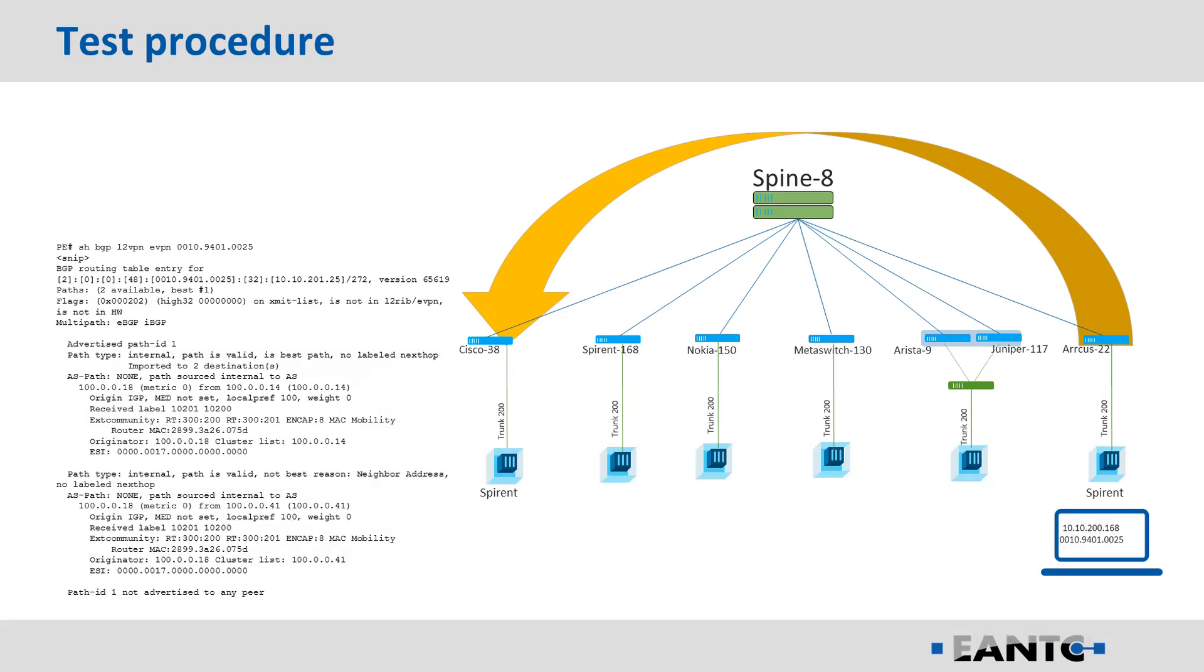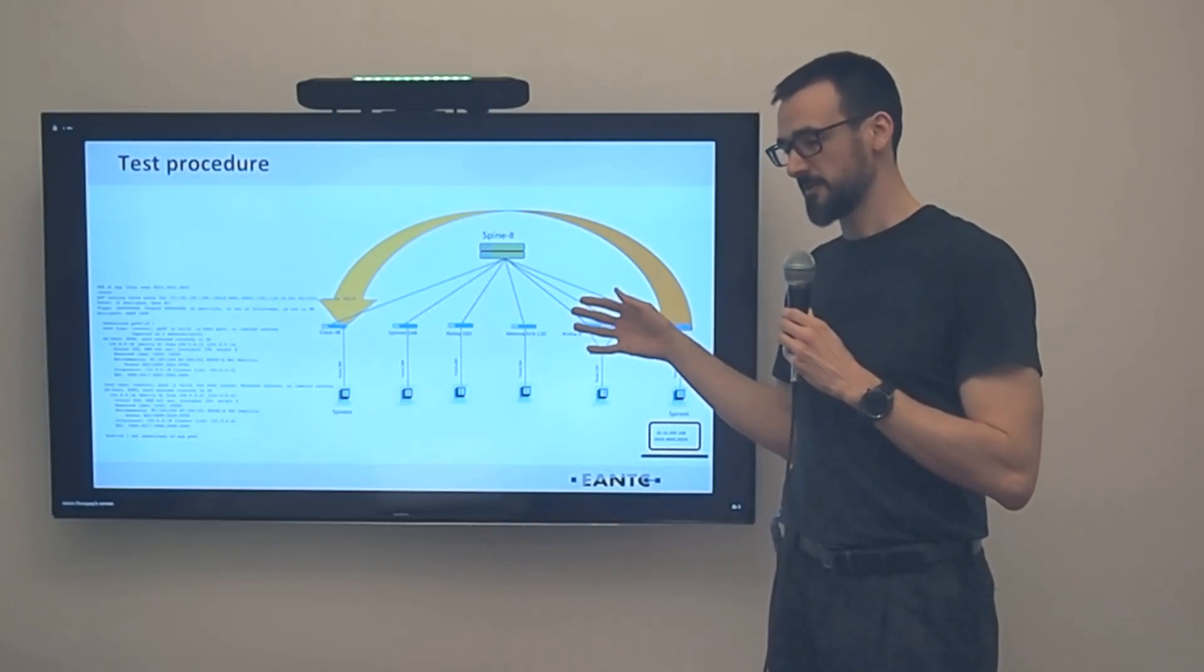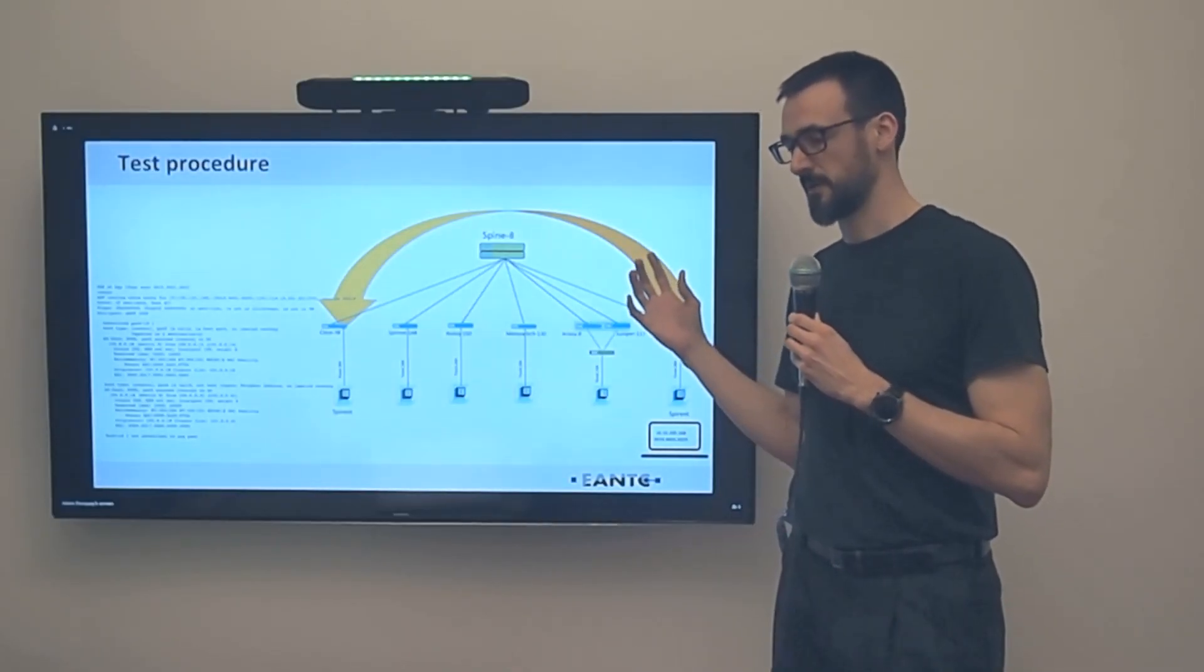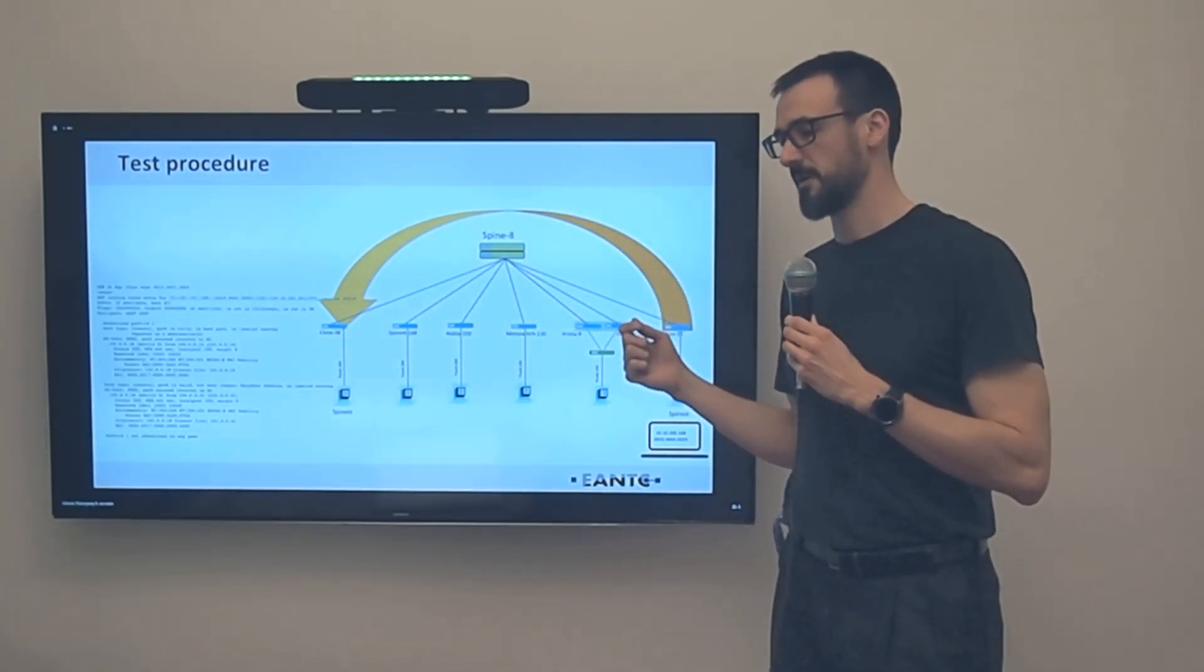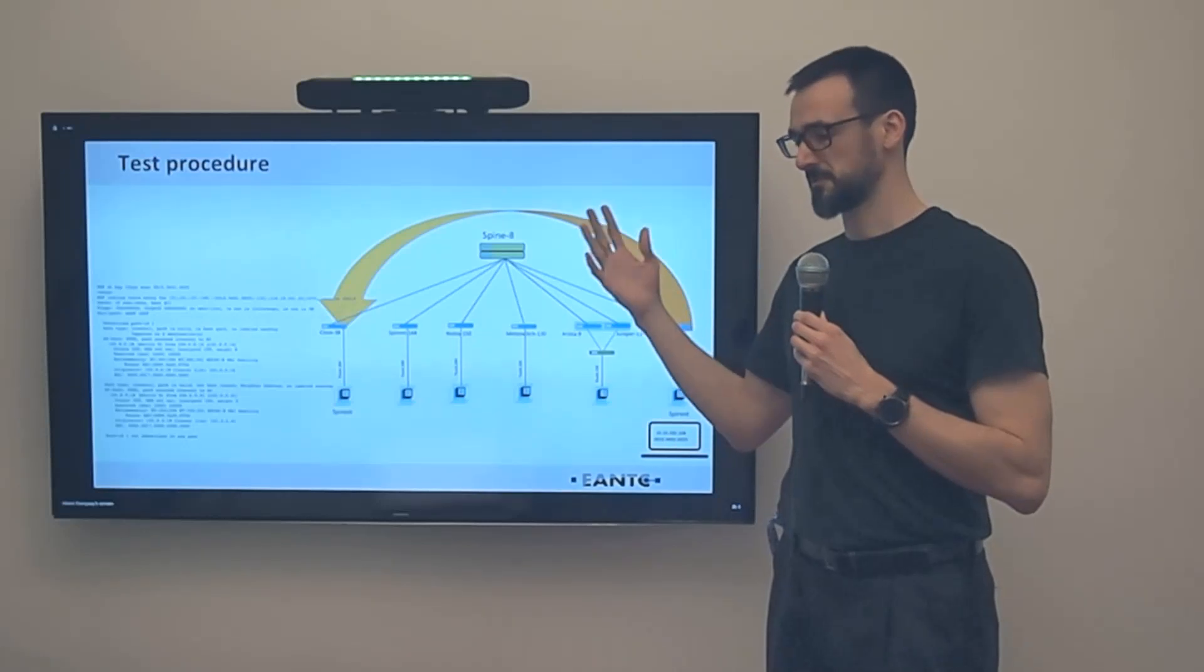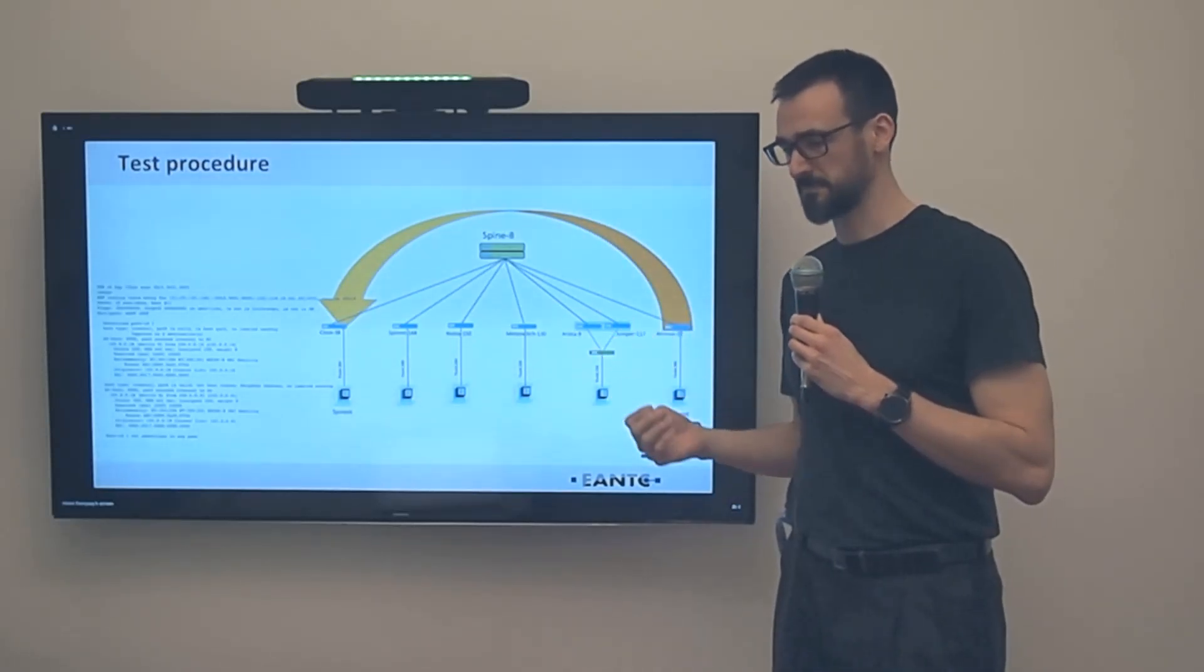Each time they learn it locally, they will take the sequence number that they had received from the previous PE and increment that number, advertise it to the route reflectors, to the spine devices.